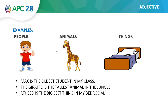Here we have examples with people, animals, and things. Max is the oldest student in my class — please read with me: Max is the oldest student in my class. Now an example with an animal: the giraffe is the tallest animal in the jungle. Now it's your turn: the giraffe is the tallest animal in the jungle. And the last one with things: my bed is the biggest thing in my bedroom. Please repeat: my bed is the biggest thing in my bedroom.